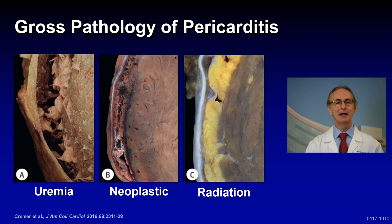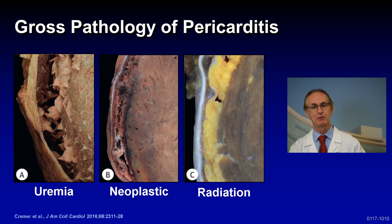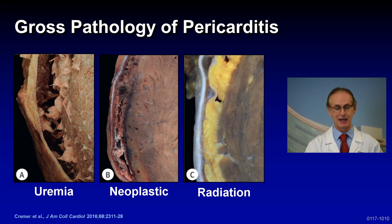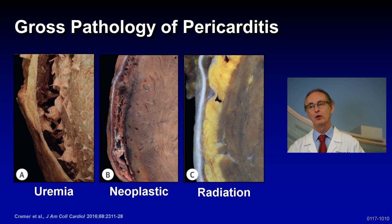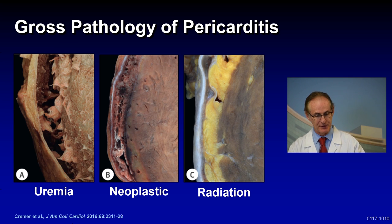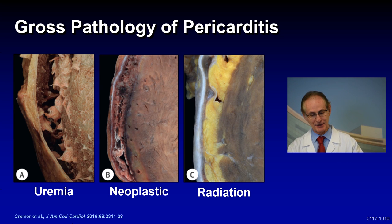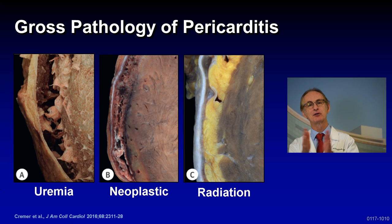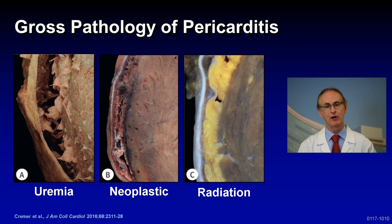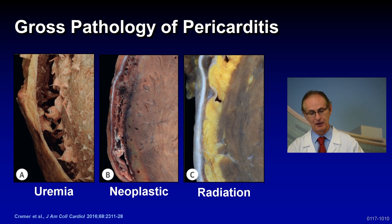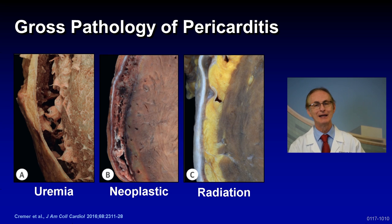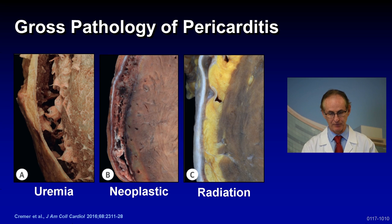But what happens when you get pericarditis? On the far left is the example of uremia, where you get inflammation and fibrin deposits in the pericardial space. In the middle panel you have neoplastic disease where you get some bleeding into the fibrin and the layers are trying to fuse. The far right shows somebody that's had radiation where the pericardilator in gray is all fused. These are different cases of pathology of pericarditis.